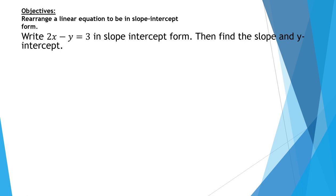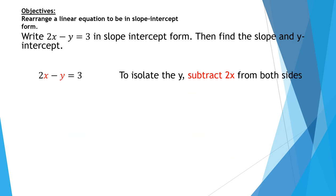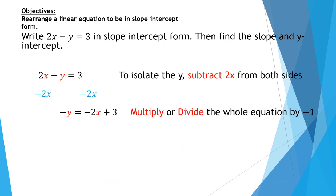Rearrange a linear equation to be in slope intercept form — this is the objective of our lesson. Let's work with another example: write 2x minus y equals 3 in slope intercept form, then find the slope and y-intercept. I want to isolate the y, so I subtract 2x from both sides. It becomes negative y equals negative 2x plus 3. I want y to be positive, so I multiply the whole equation by negative 1, which changes all the signs. The equation becomes y equals 2x minus 3.